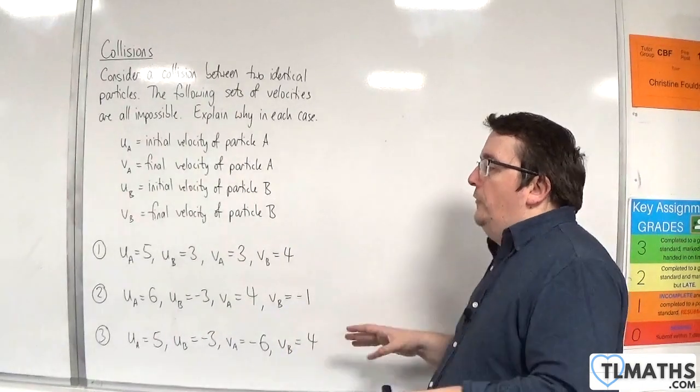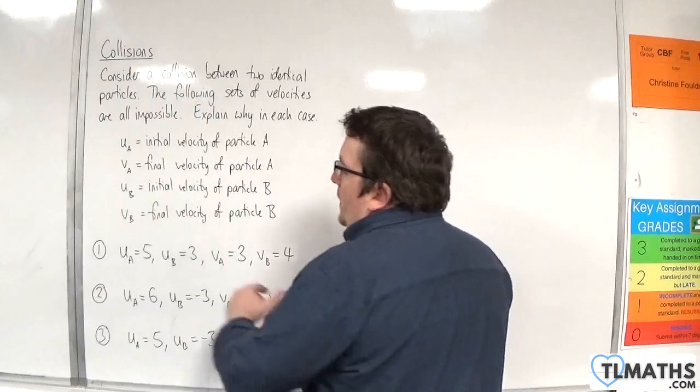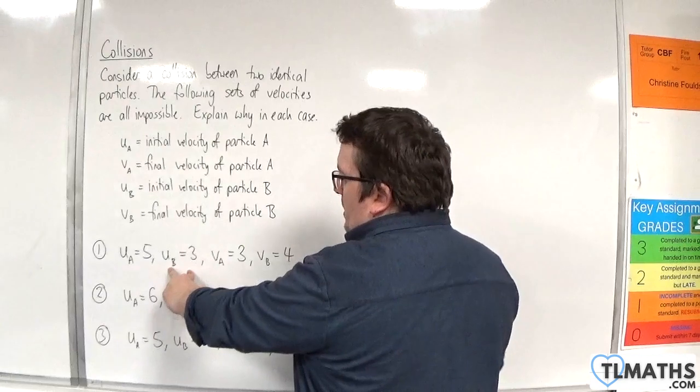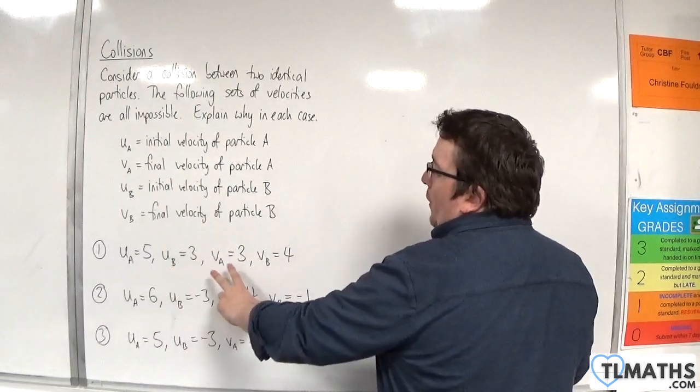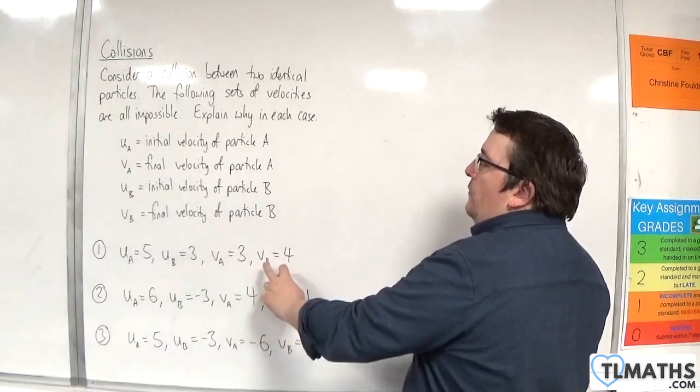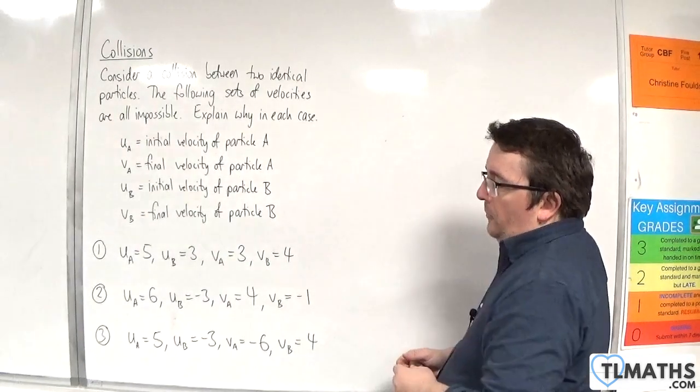The first scenario: the initial velocity of A is 5 meters per second, the initial velocity of B is 3 meters per second, the final velocity of A is 3 meters per second, and the final velocity of B is 4 meters per second.